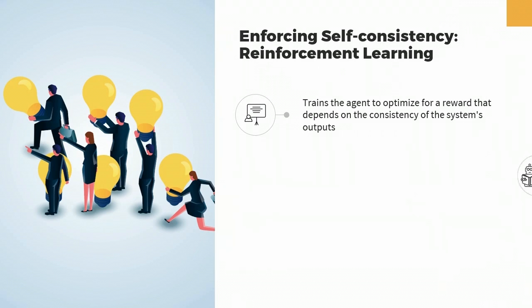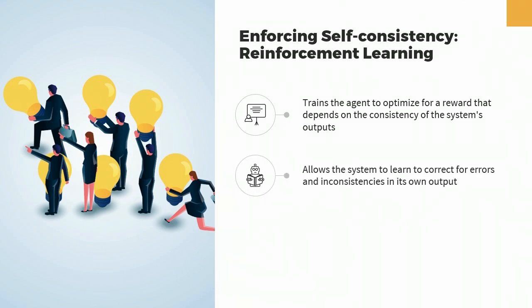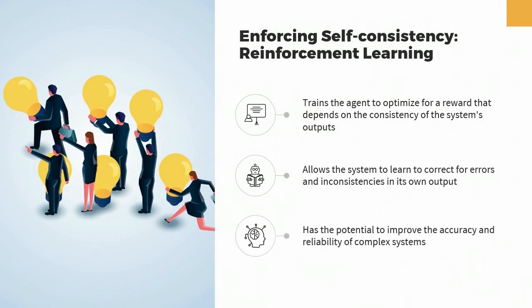This approach has several potential benefits, such as allowing the system to learn to correct for errors and inconsistencies in its own output, reducing the need for human intervention. Additionally, reinforcement learning can enable the system to adapt to changing circumstances and improve its performance over time. Overall, reinforcement learning is a promising approach to enforcing self-consistency in complex systems.